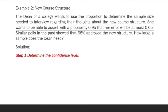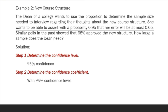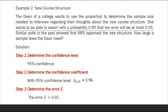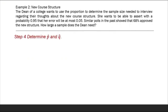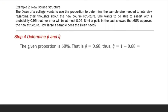Step one: determine the confidence level — 95% confidence. The confidence coefficient z sub alpha over 2 is 1.96 from the z-table. Next, determine the error E: E equals 0.05 as given. Determine p-hat and q-hat: the given proportion is 68%, so p-hat equals 0.68, and q-hat equals 1 minus 0.68, which is 0.32.